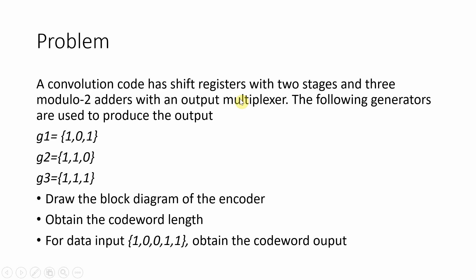Now let us take an example where we have to design a convolution code encoder with shift registers having 2 stages and 3 modulo-2 adders, meaning there are 3 outputs. Generators G1, G2, and G3 are also given. We have to draw the block diagram of the encoder, obtain the codeword length, and also obtain the codeword for the given input data sequence.